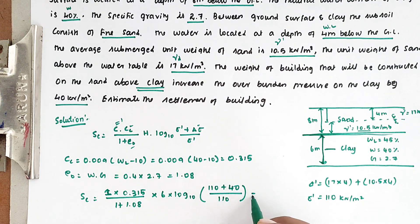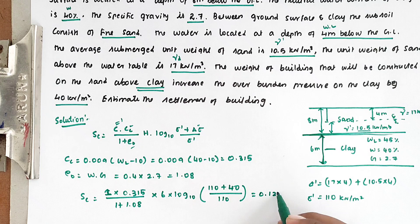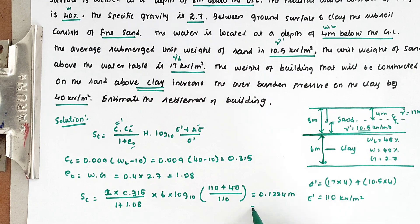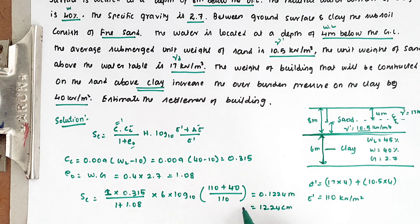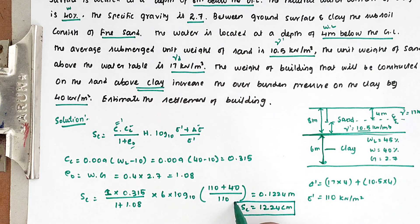Solving this, we get the value of 0.1224 meters, that is 12.24 centimeters. This is the final settlement. This is the method we can use to solve the problem. We will see the next video. Thank you.